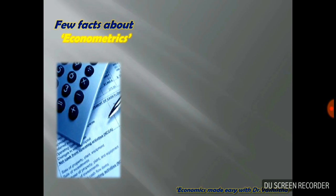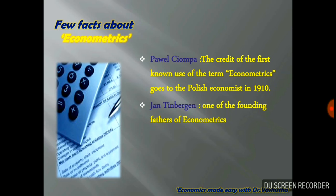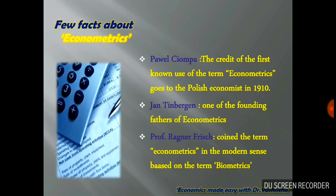Now let us get acquainted with a few facts about econometrics. It was in 1910 that a Polish economist, namely Pavel Ciemper, was the first known person who actually used the term econometrics in history. Further, Jan Tinbergen was one of the founding fathers of econometrics. And Professor Ragnar Frisch was the one who actually coined the term econometrics in the modern sense, based on the term biometrics.